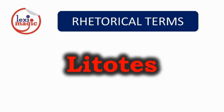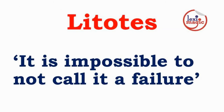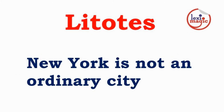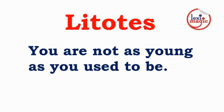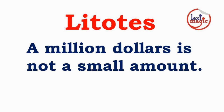Litotes is the use of double negatives to understate something, derived from the Greek word meaning 'simple.' Examples: 'It is impossible to not call it a failure' is litotes for 'it is a failure.' 'New York is not an ordinary city.' 'You are not as young as you used to be.' 'A million dollars is not a small amount.'